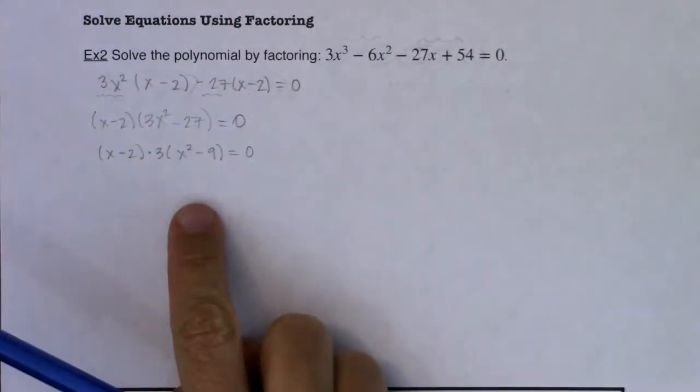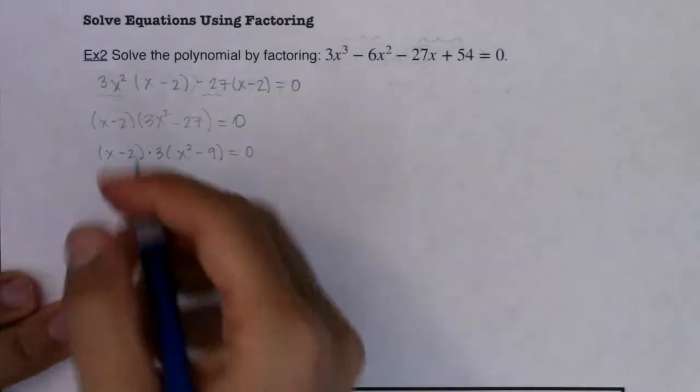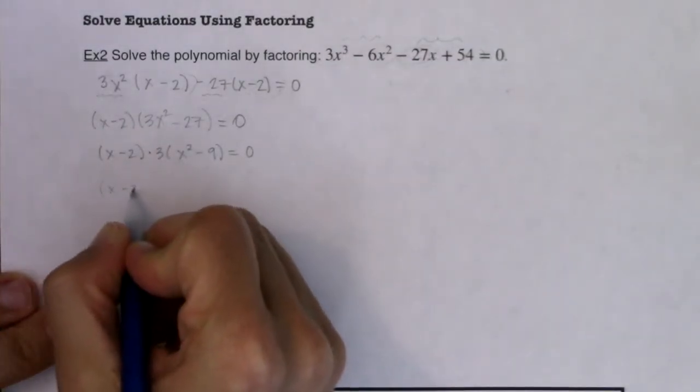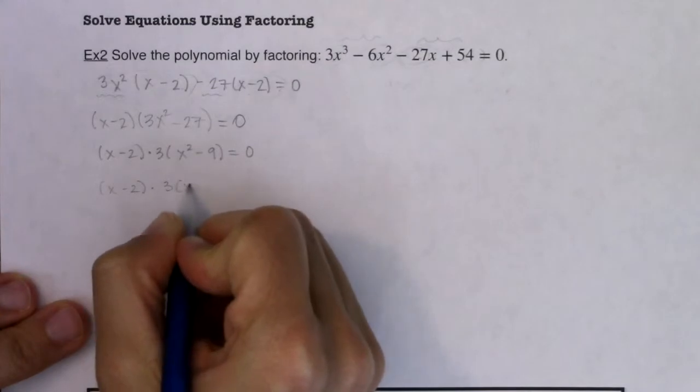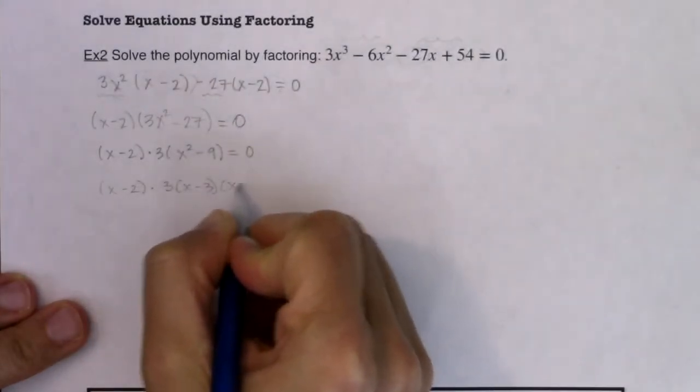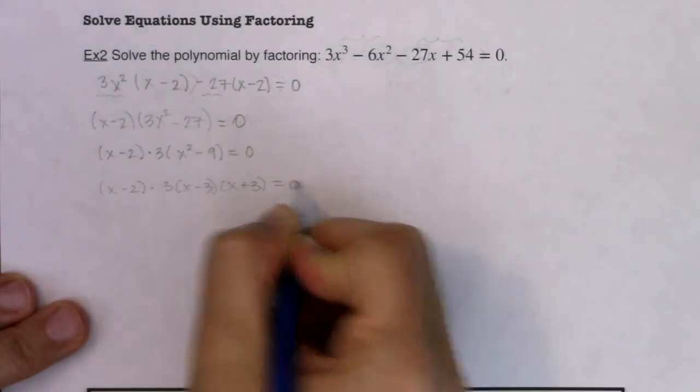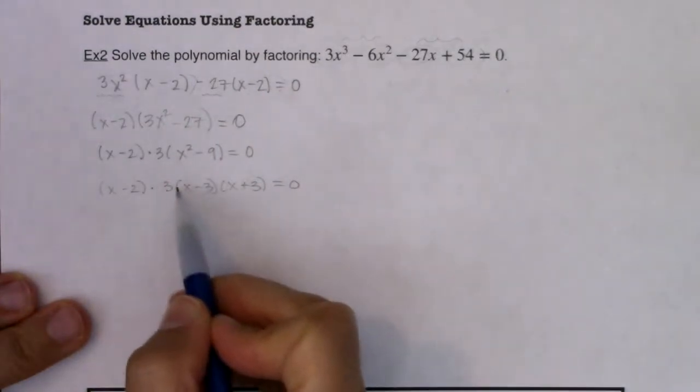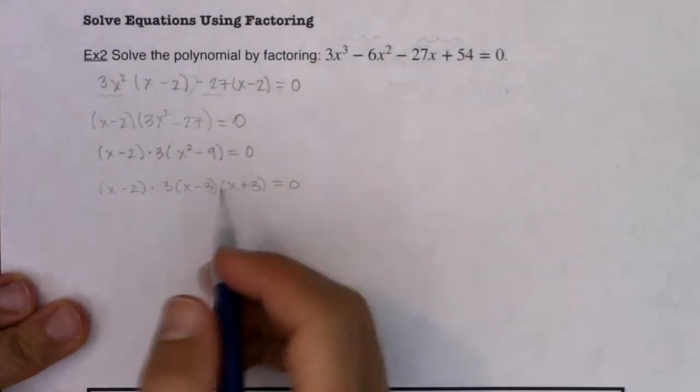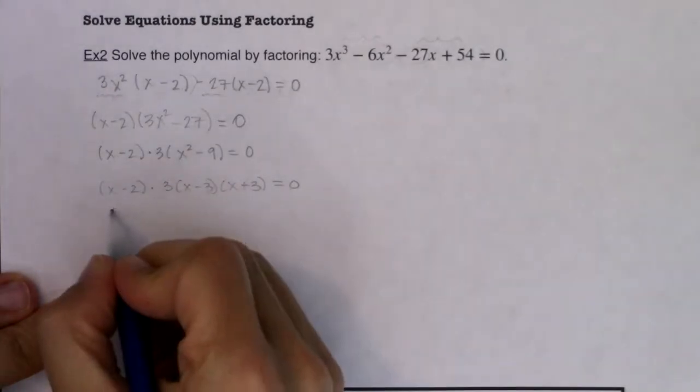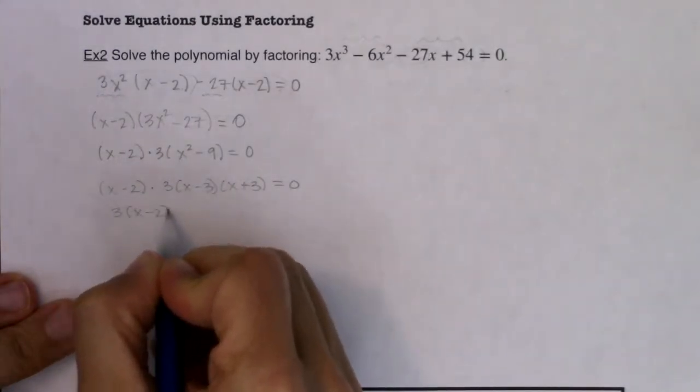And then that's kicking back to that difference of squares that we talked about in the previous section. So this is going to be x minus 2 times 3, x minus 3, x plus 3, that will be equal to zero. We typically like to have our coefficients out in front and since multiplication is commutative it doesn't matter what order I write any of this in.